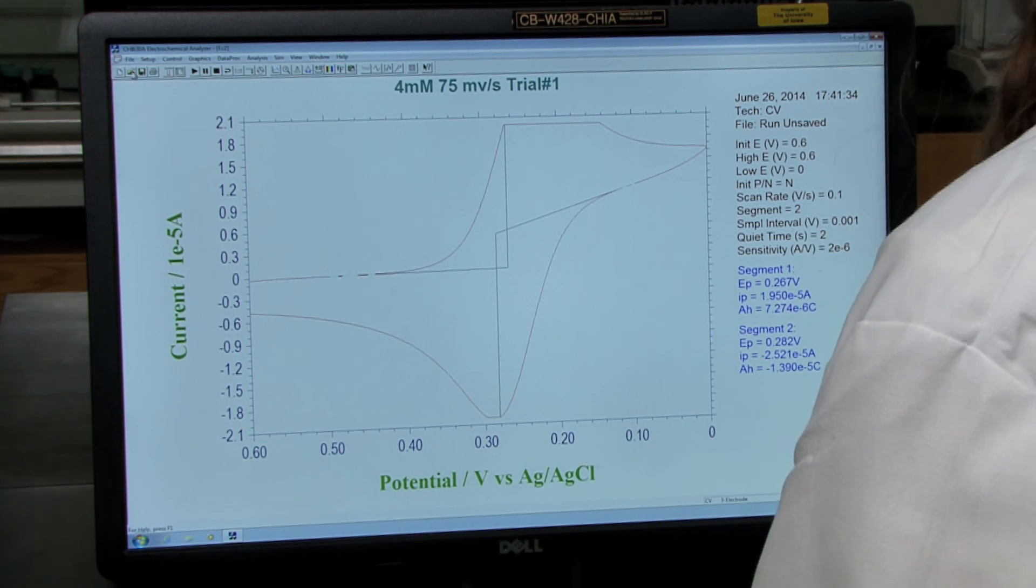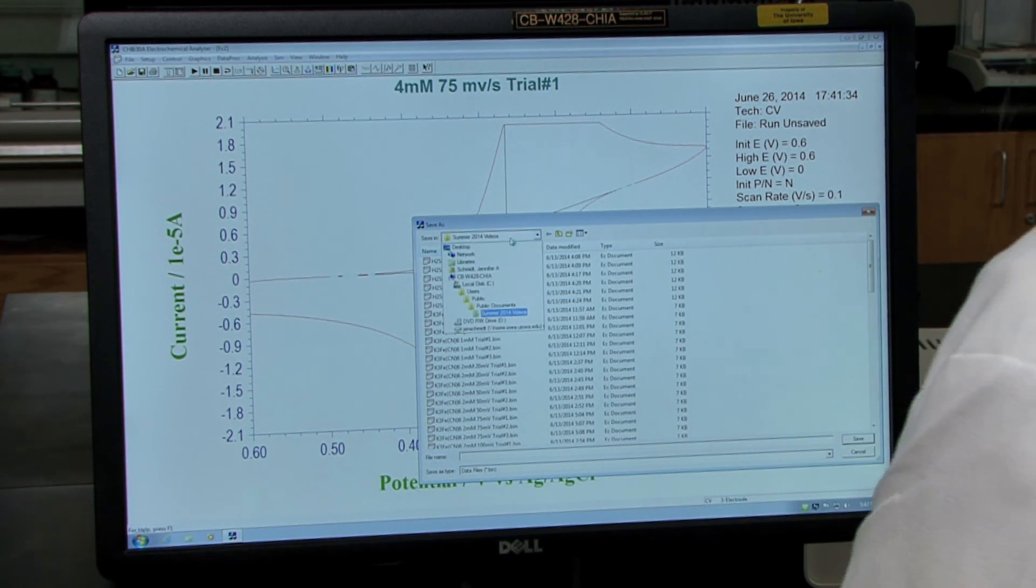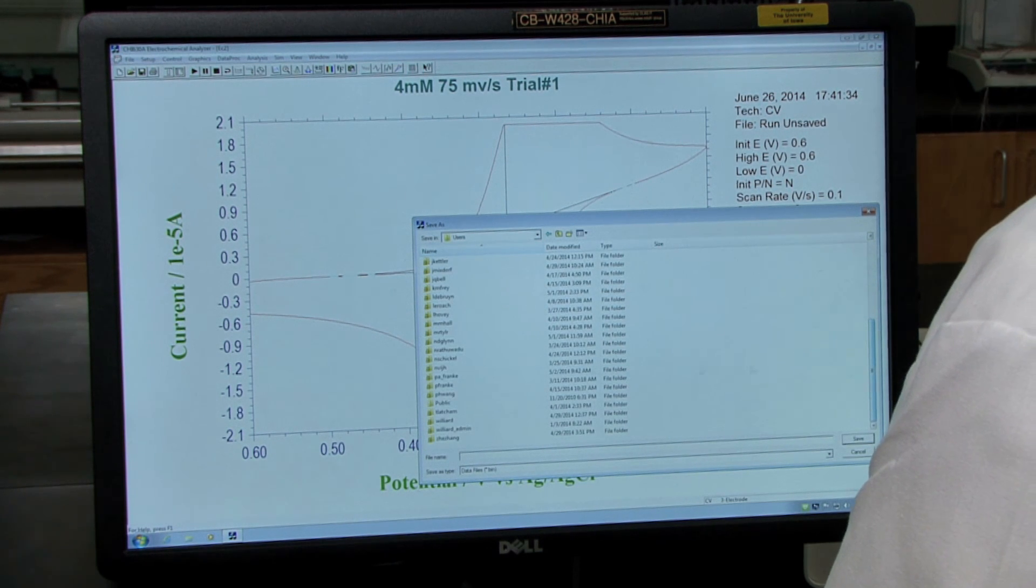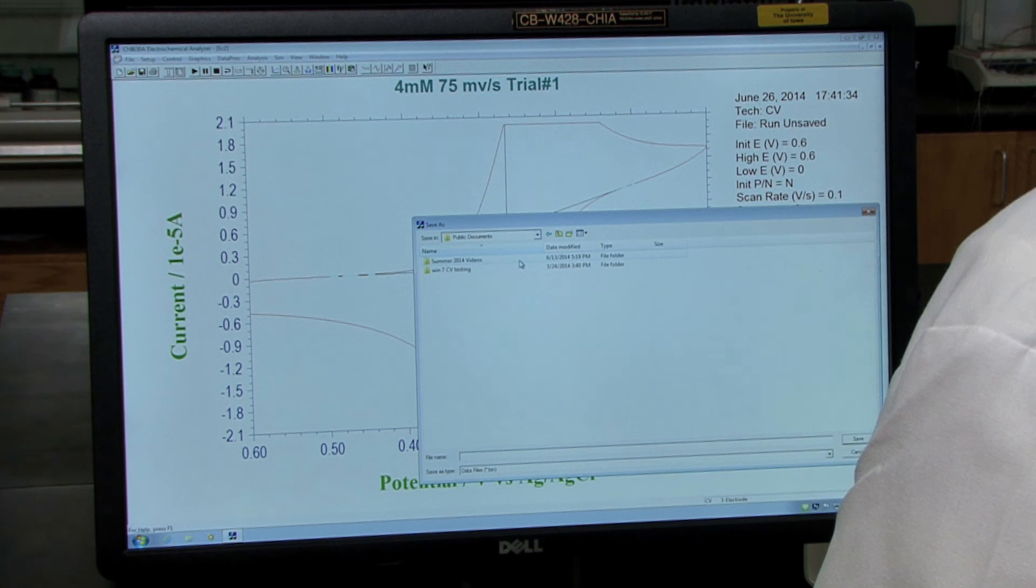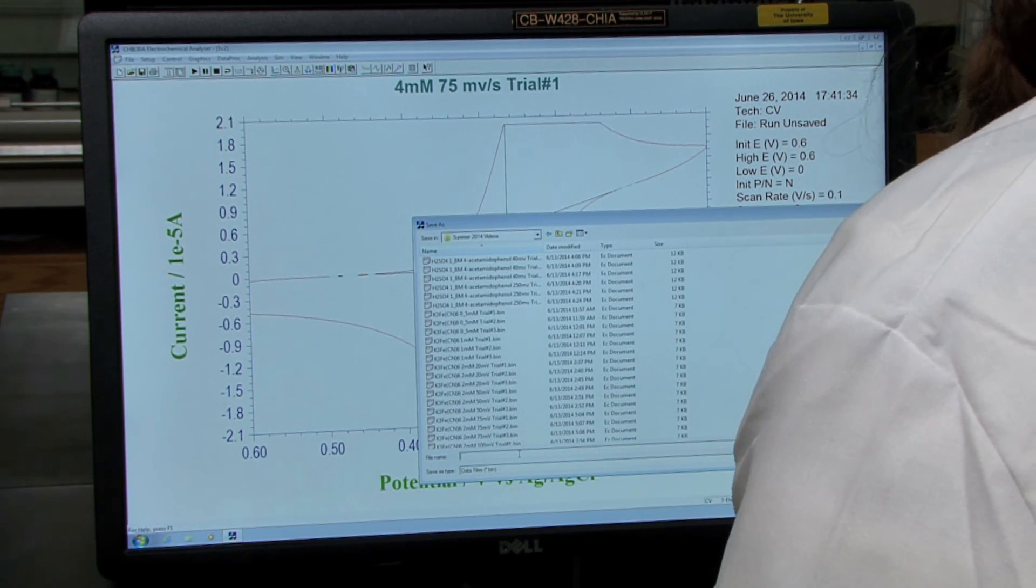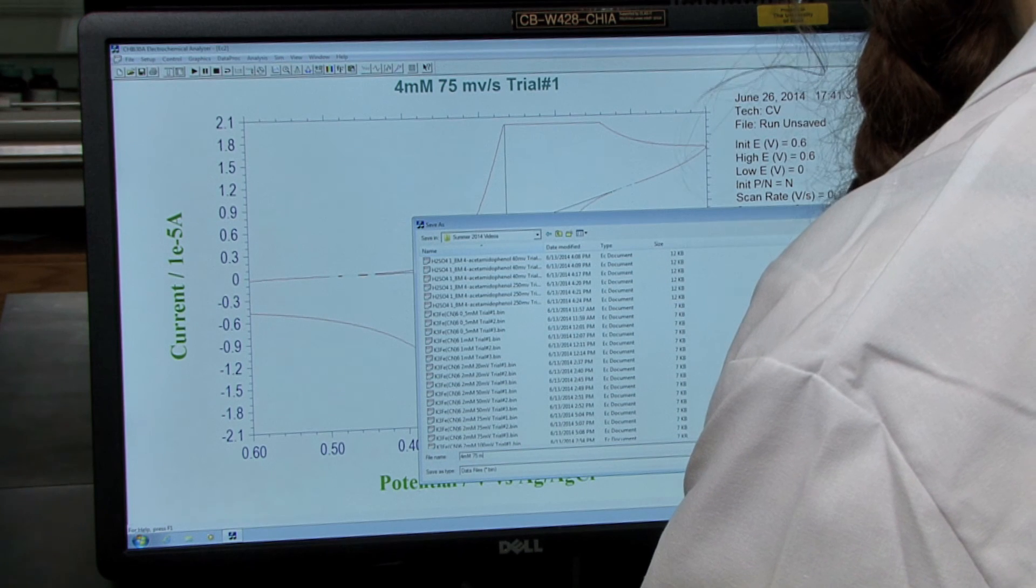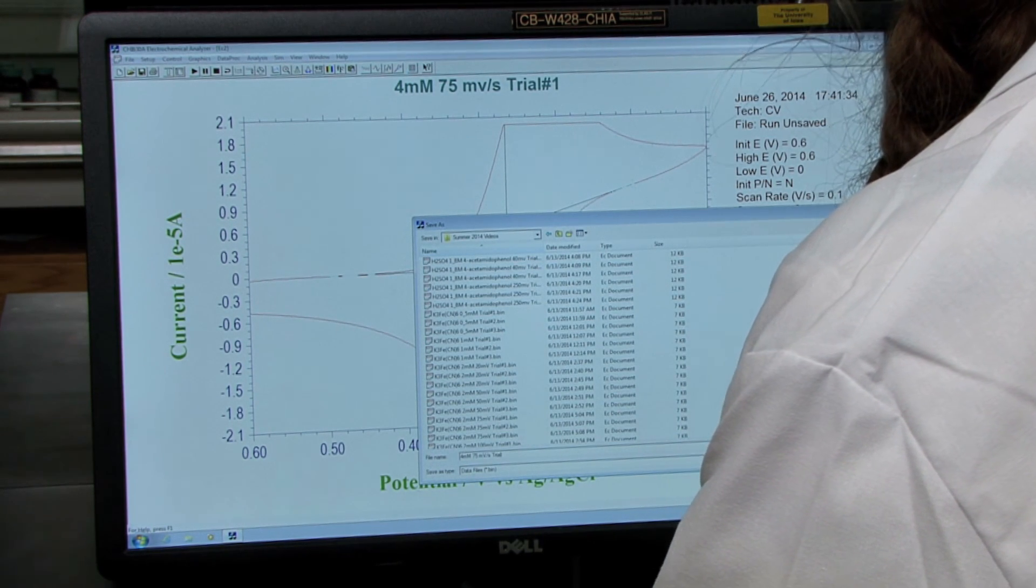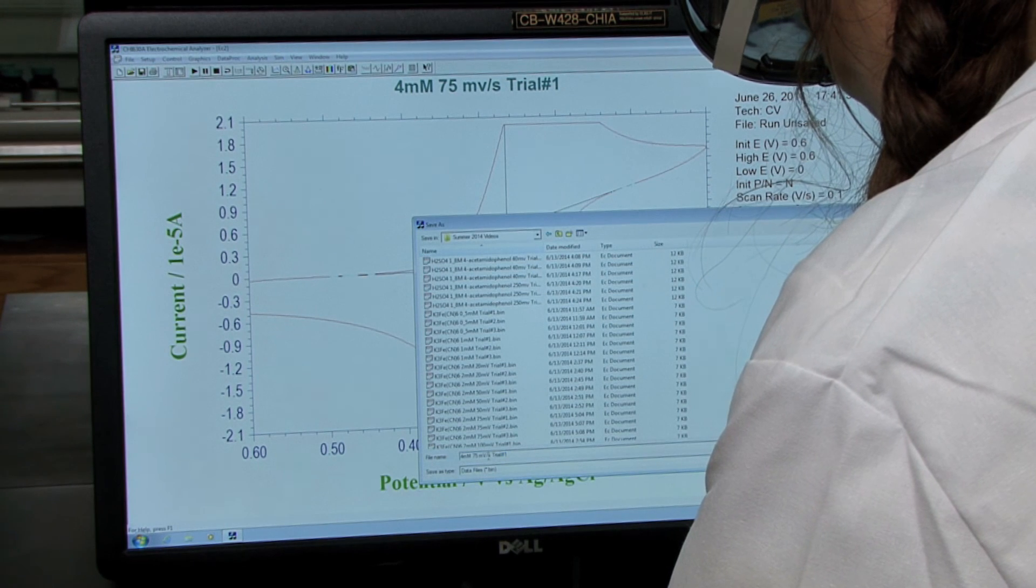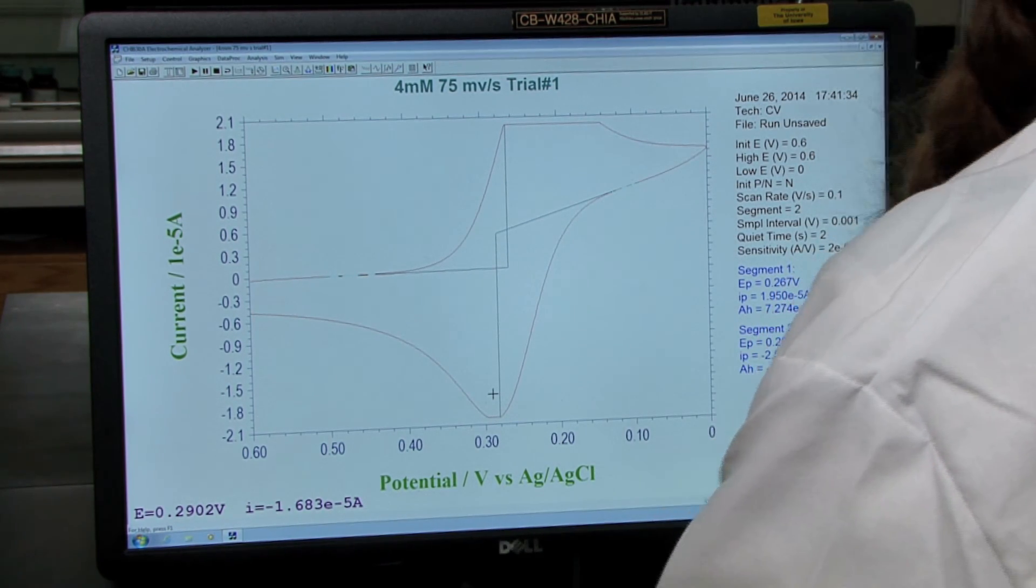To save the CV, go to file, save as. You want to save it in a public space so every member of your group has access to it. I'm going to save this under local disk, users, public users, public, and then in public documents. I've created a folder here. Again, the same thing applies when you're saving your file name: do not have any periods or decimal places, otherwise it will not save properly. Then you can just hit save. Now you're ready to move on to take the second trial of your solution.